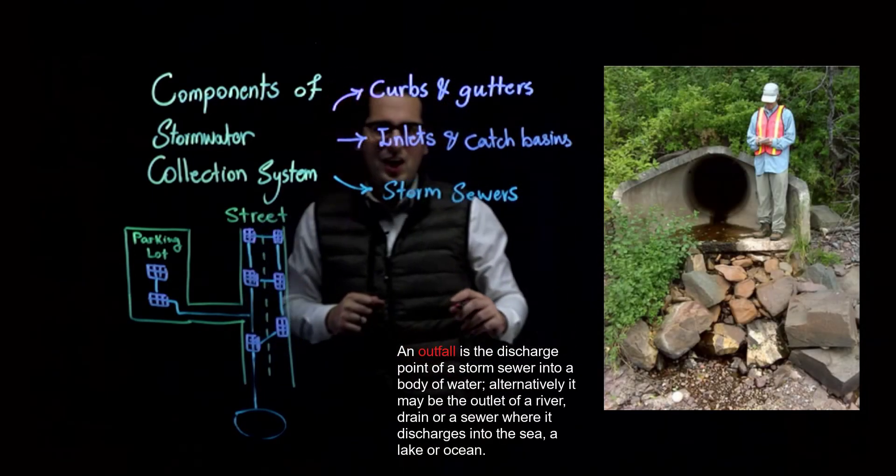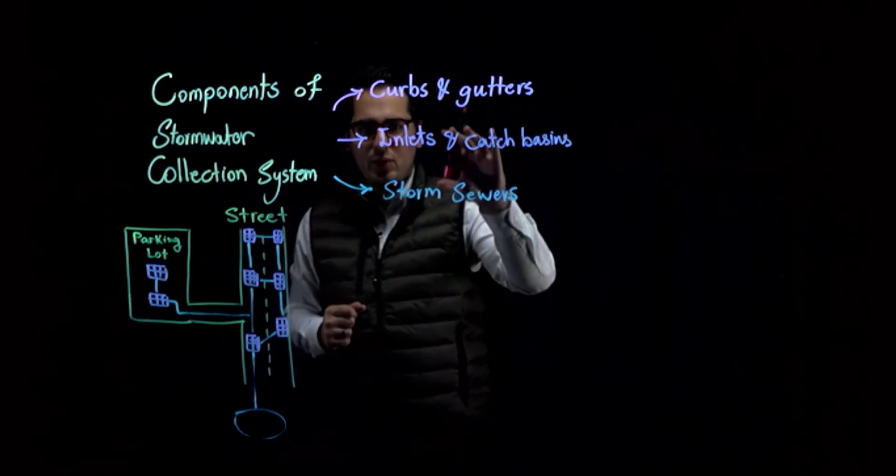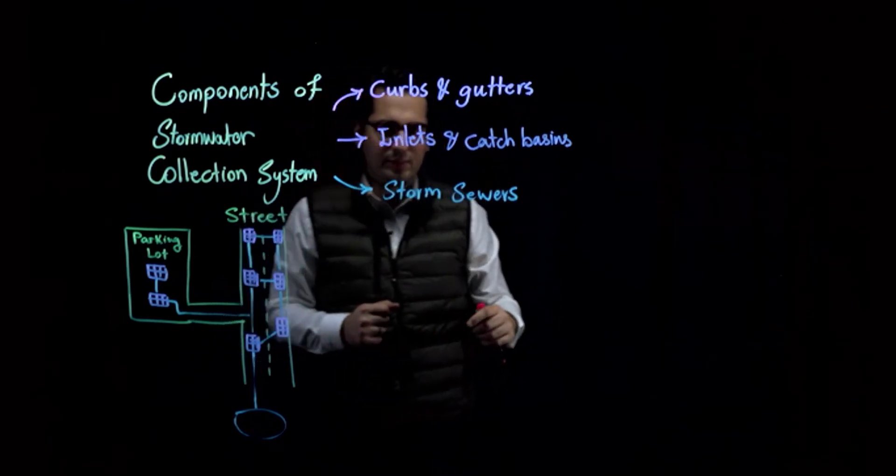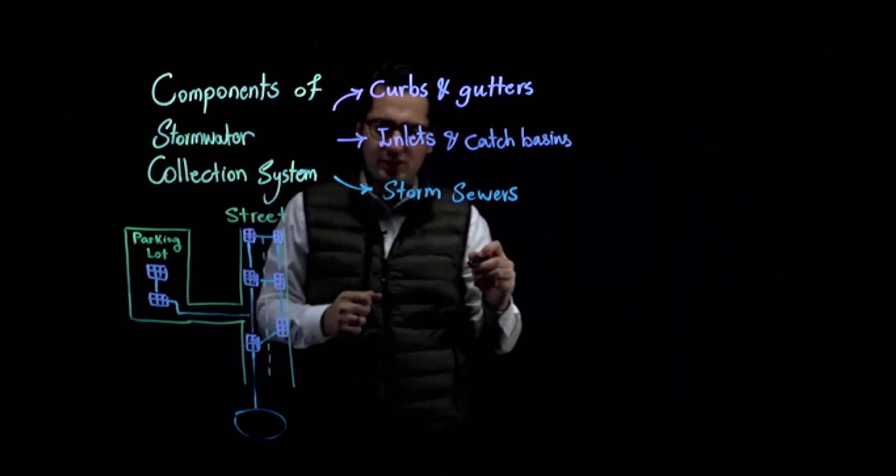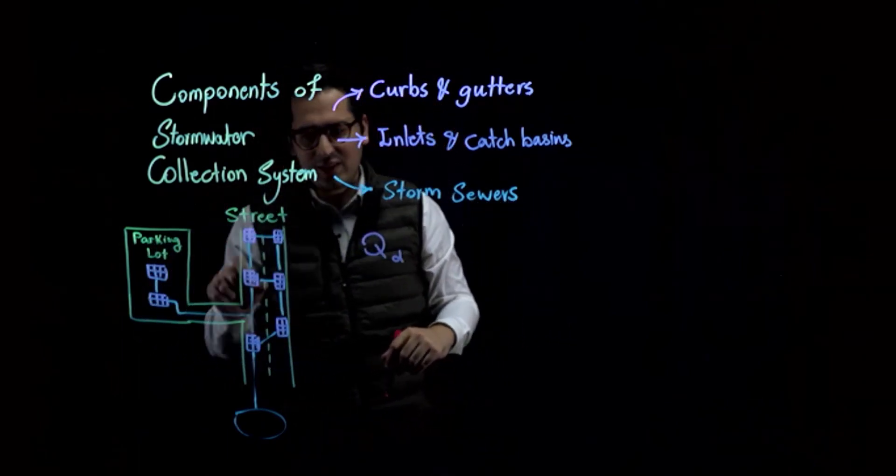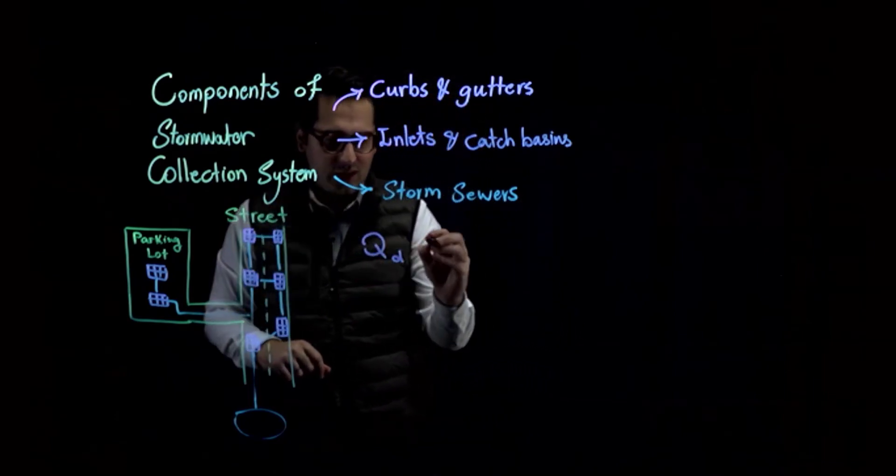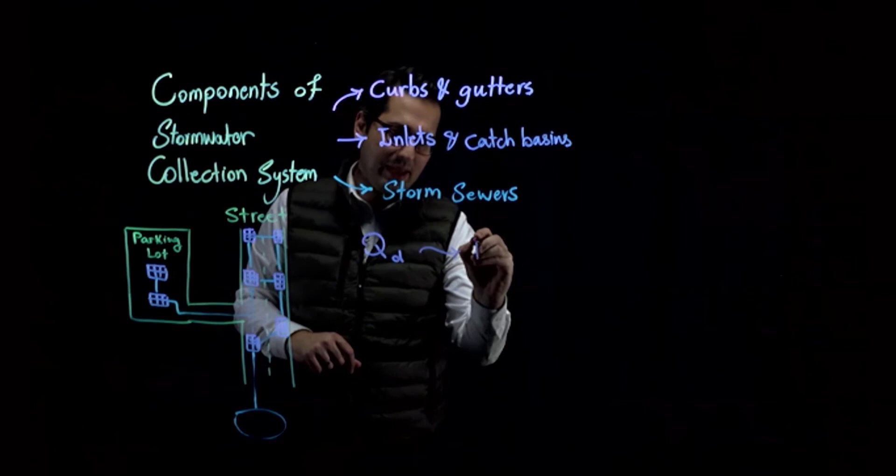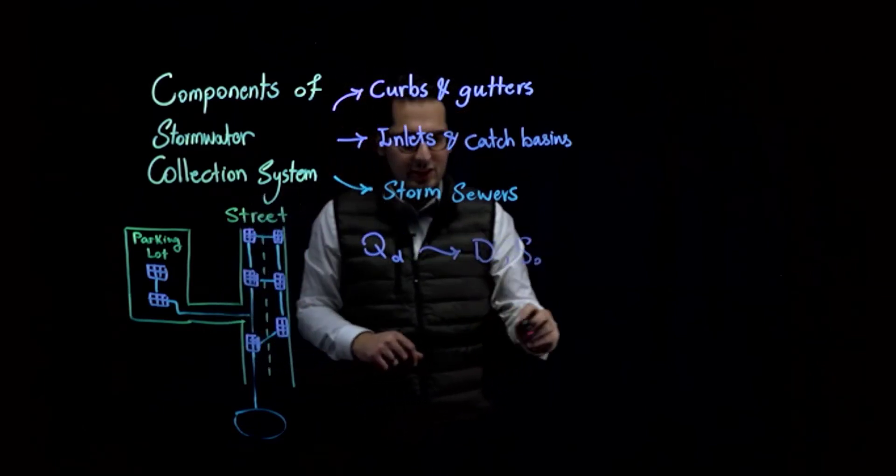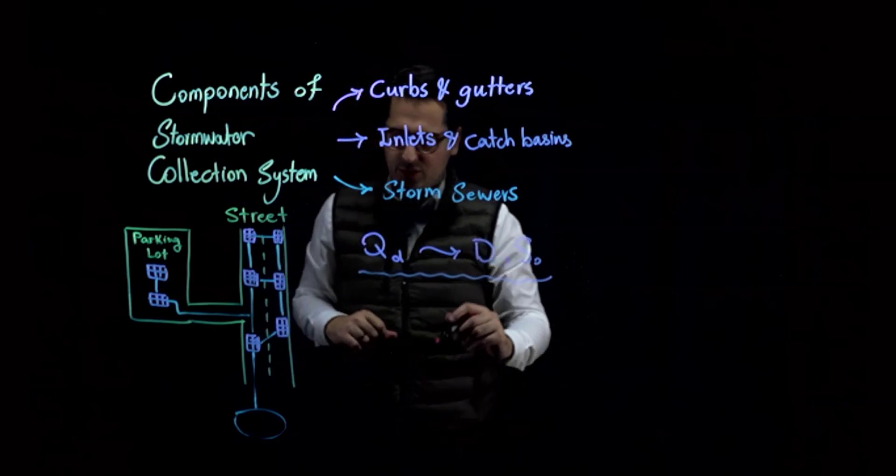In the next parts of this video series, we are going to talk about these components. And we are going to learn how we can design a stormwater collection system. When I talk about design of stormwater collection system, I talk about a design flow. This is the design flow that goes into each of these inlet and catch basins. And according to this design flow, we will be able to calculate the diameter of the storm sewer and also the slope of the storm sewer. And this would be what we want to do for the design of our stormwater collection system.